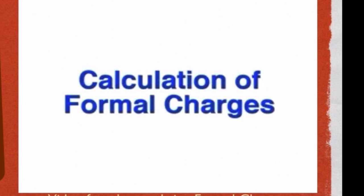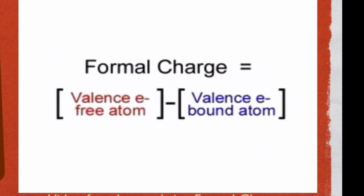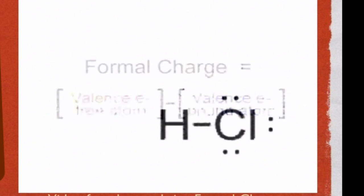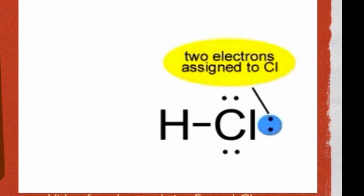Formal charges are a way of keeping track of the electronic charges in molecules. They are calculated as the number of valence electrons associated with the free atom minus the number of electrons associated with the atom in a molecule or ion. The rules for calculating the number of valence electrons are illustrated by the example of HCl. Unshared electron pairs are assigned entirely to the atom carrying them, and shared electron pairs are assigned equally to the two atoms sharing them.